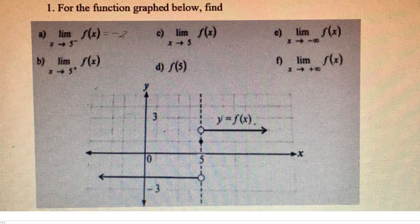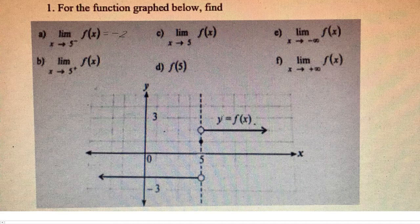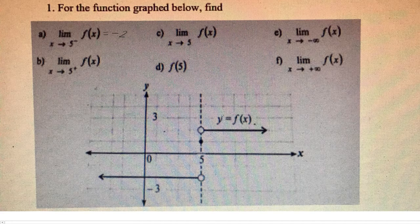For b, we're approaching it from the right, so we have to come up on the top here. And so as we're approaching it from the right, we approach this circle, which is at y equals positive 2.